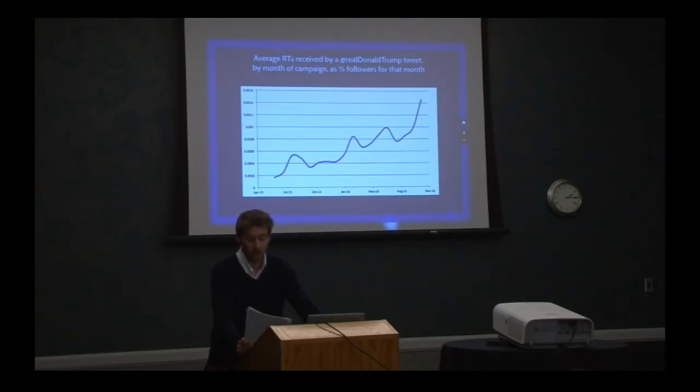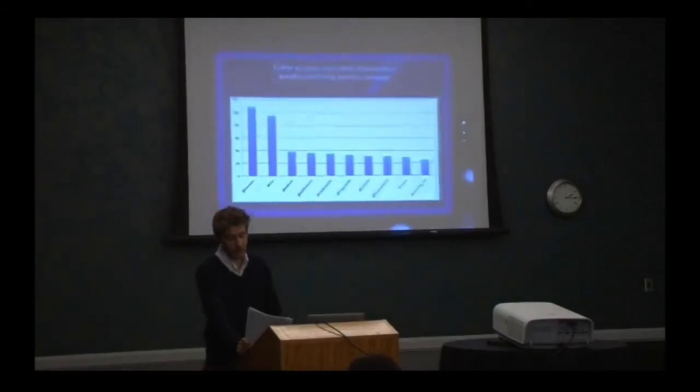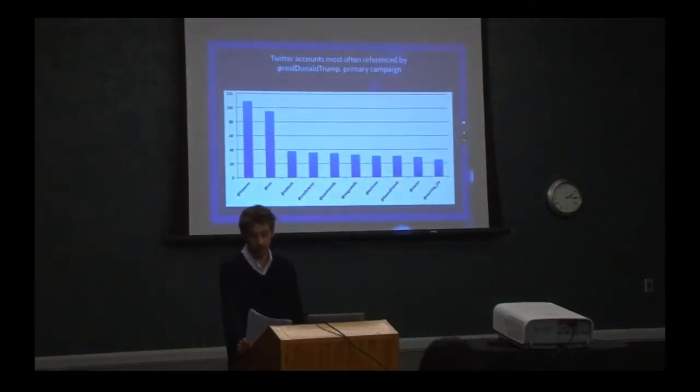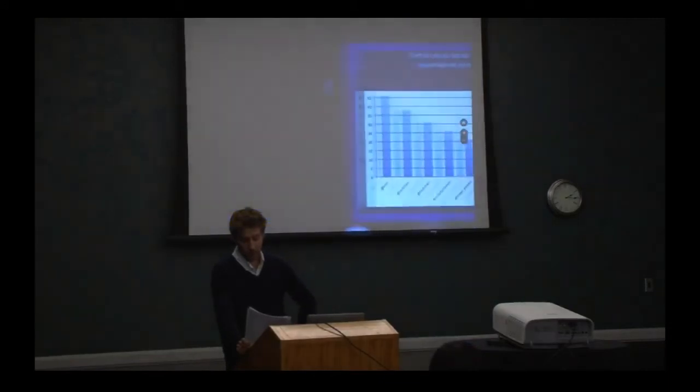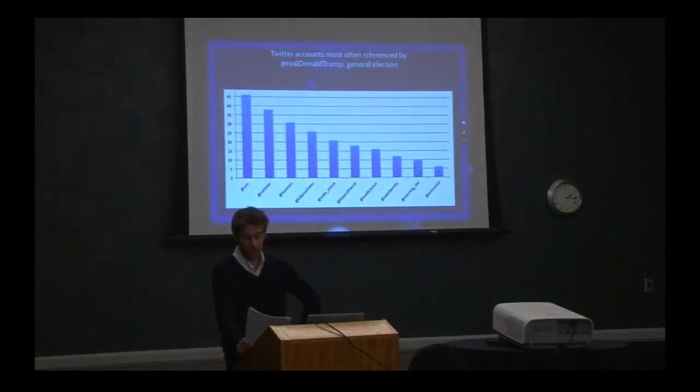And yet, as Trump appears to have intuited, reaching several million followers, or even several million more through retweets, wasn't enough. He also needed to establish as much exposure as possible in the mainstream media. Another part of Twitter's architecture is the at reply, which links your own tweet to the account of somebody else while using the at key. As this chart shows, in the most common use of at replies, Trump sought attention from predominantly media sources, with a couple of strange exceptions. In the primary, this mostly meant the at least somewhat sympathetic to his campaign, Fox News Channel. In the general election, however, Trump's media diet appears to have evolved, to include centrist sources like CNN and the New York Times.